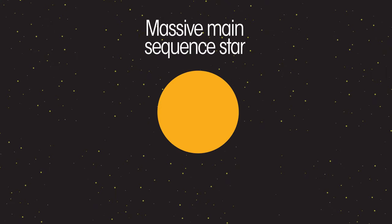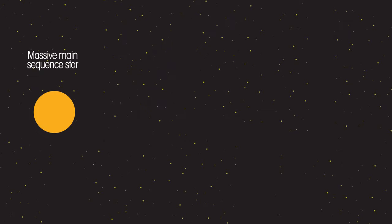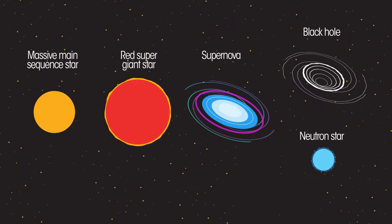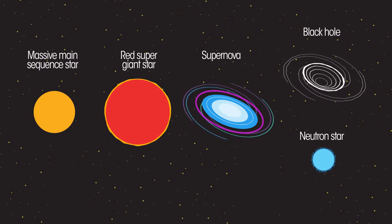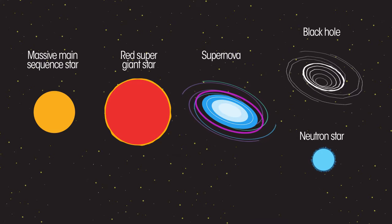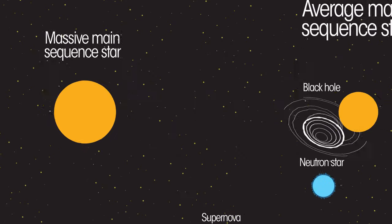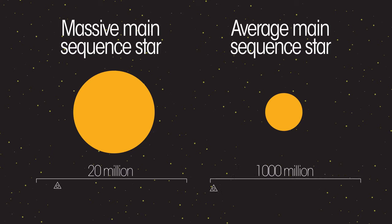So what about bigger stars? What happens to them? They follow a different pattern. These stars too eventually run out of hydrogen, but quicker than a smaller star would. Massive stars, as a result, have a much shorter main sequence life than smaller stars.